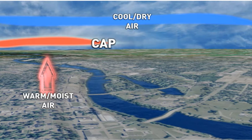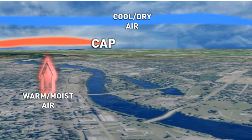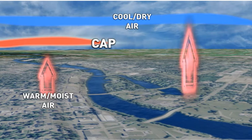Basically, warm moist air always rises. The cap stops that from happening. It's a layer of warm air, and it divides the cool, dry air up top and the warm, moist air that's trying to rise on up.